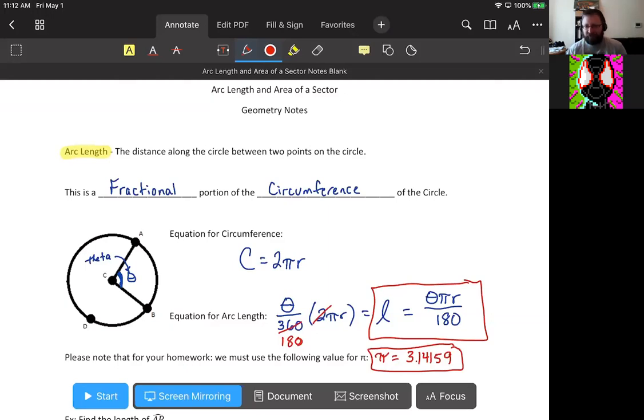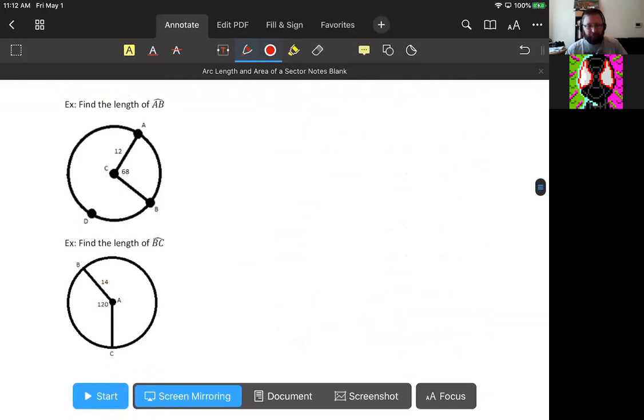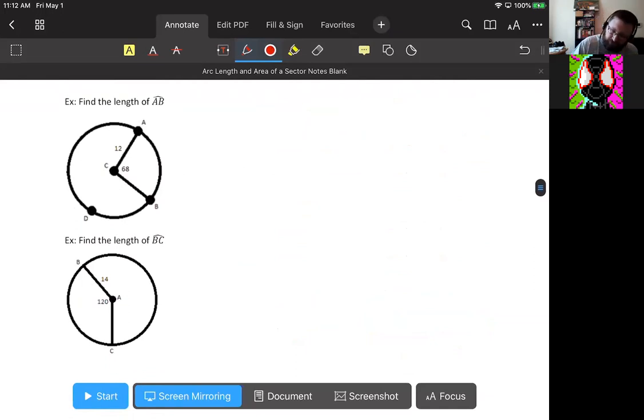So let's do a couple of arc length examples here, and then we'll move on into the other topic for today, area of a sector. So here are two examples. We're going to find the arc length of AB. So the arc length of AB is going to be π times theta times r over 180. Theta is 68, r is 12,